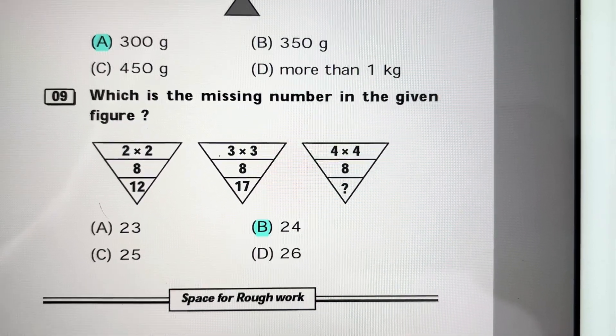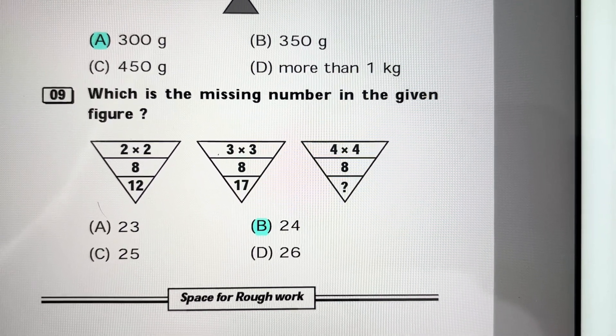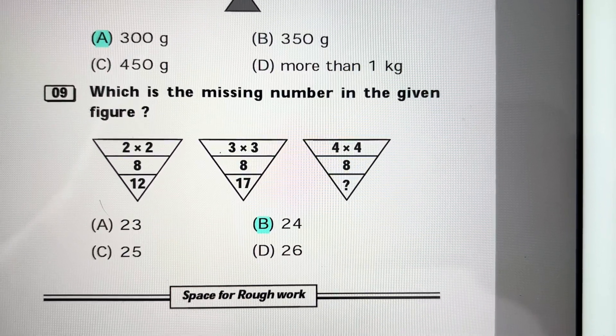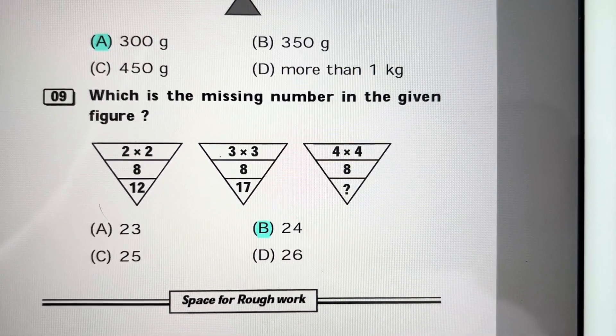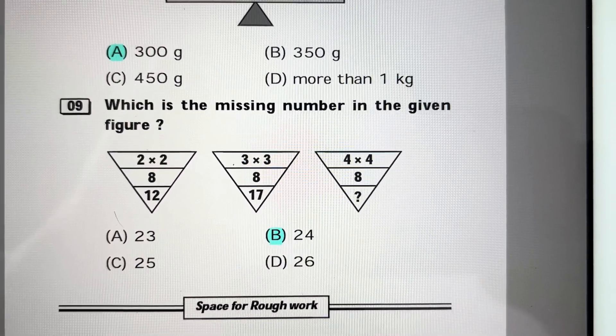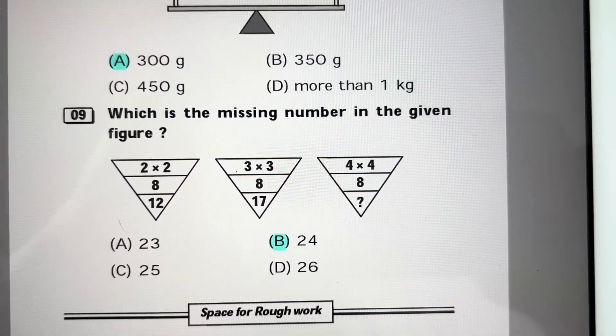Question 9: What is the missing number in the given figure? First you have to identify the relation. 2 into 2 equals 4, 4 plus 8 is 12. 3 into 3 equals 9, 9 plus 8 is 17. So 4 into 4 equals 16, 16 plus 8 is 24. Answer is B, 24.